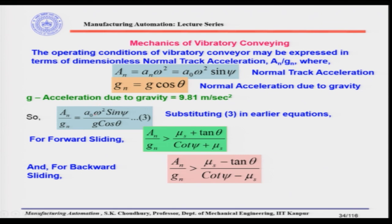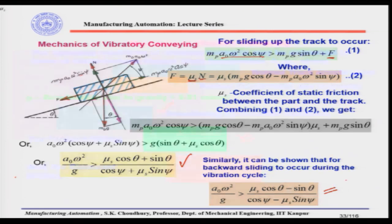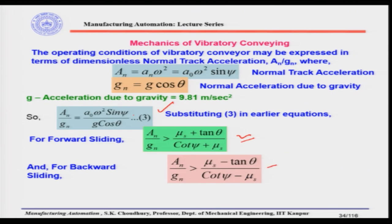From this, the dimensionless normal track acceleration an/gn must be greater than (μs + tan(θ)) / (cot(ψ) + μs) for forward sliding. This dimensionless parameter is more convenient to use because it directly dictates the operating condition of the vibratory bowl feeder. It is the normal track acceleration expressed in a dimensionless form.